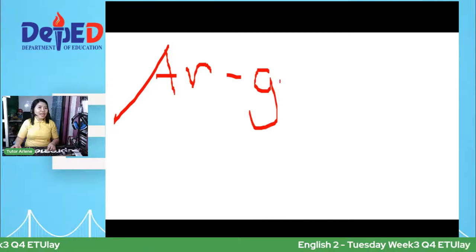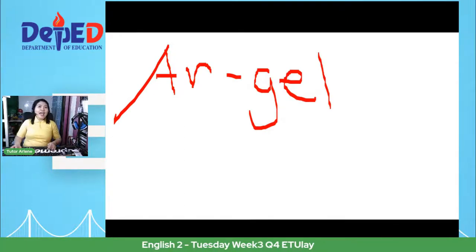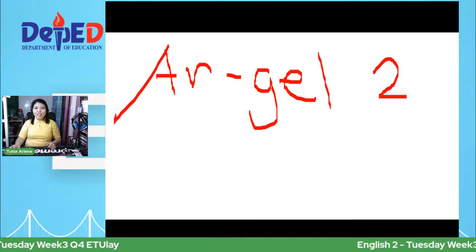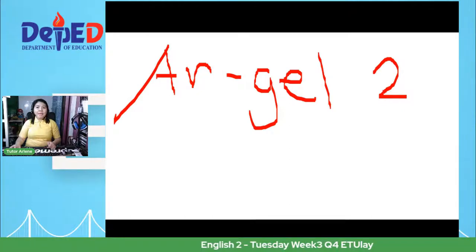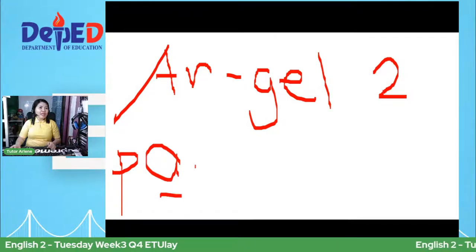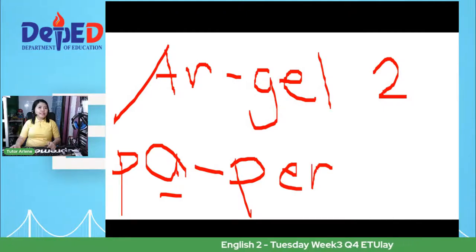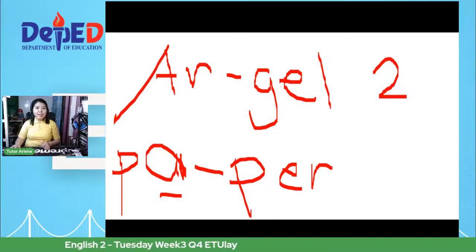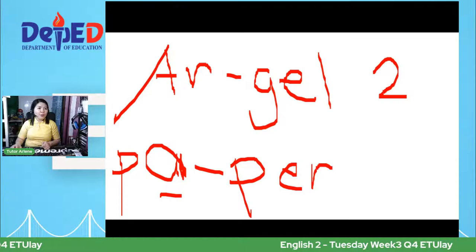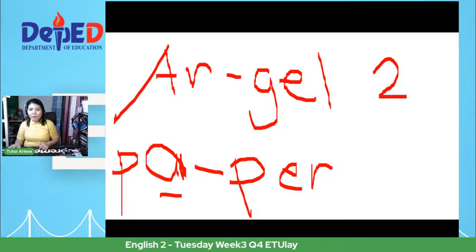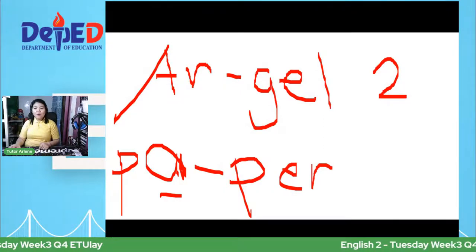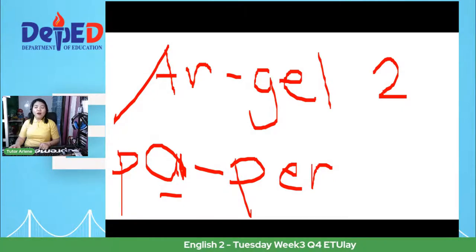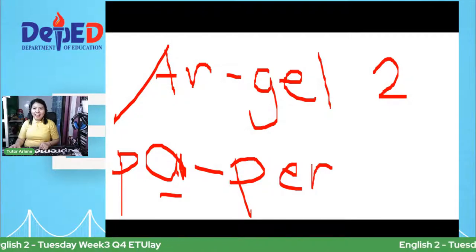My son Argel is here. Let us syllabicate 'Argel': AR-gel. How many syllables? We have two syllables again. Sabi ni Eliana: paper. Yes, paper has two syllables. But the letter A here has a long sound. Wick has one syllable with a long E sound. Now, let us get our self-learning module. For Learning Task 1, we are going to complete each word by supplying the missing letter. Choose from the vowels inside the parentheses.